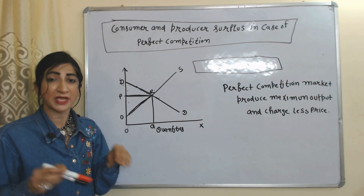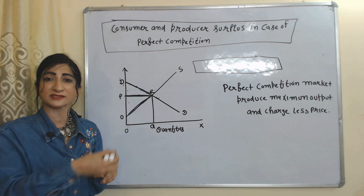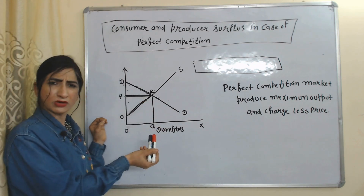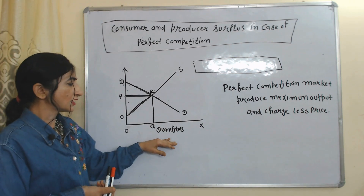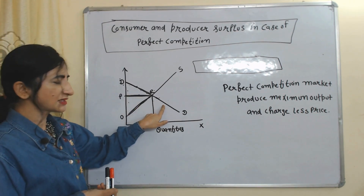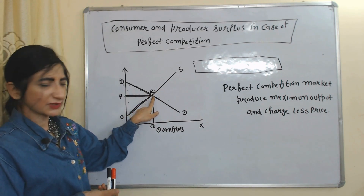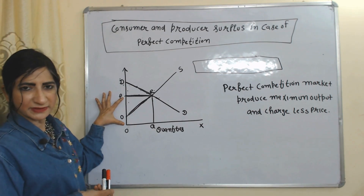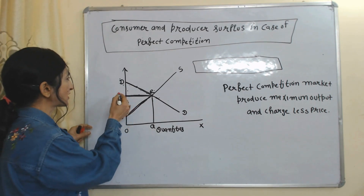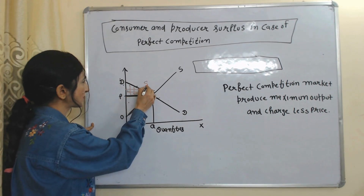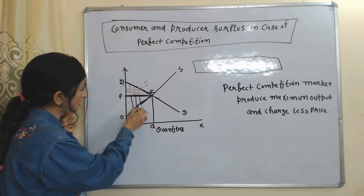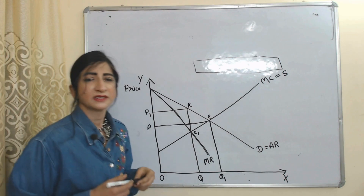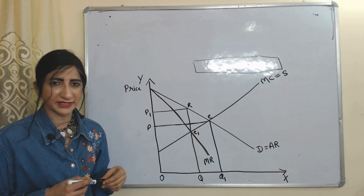Perfect competition always produces maximum output and charges less price as compared to monopoly, that's why there is always enough surplus for producer as well as for consumer. On the x-axis we have quantities, on the y-axis we have price. DD is the demand curve, OS is the supply curve, E is the market equilibrium point, OQ is the equilibrium output — the maximum amount of output perfect competition can produce — and OP is the market equilibrium price. The area PDE is consumer surplus and OPE is producer surplus.